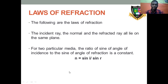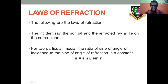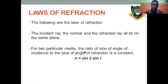Let's go to the next slide. The following are the laws of refraction. The first law: the incident ray, the normal, and the refracted ray all lie on the same plane. For two particular media, the ratio of the sine of the angle of incidence to the sine of the angle of refraction is a constant — this is the second law, known as Snell's law. The incident ray, the refracted ray, and the normal are all acting on this horizontal plane — that is what the first law is talking about.